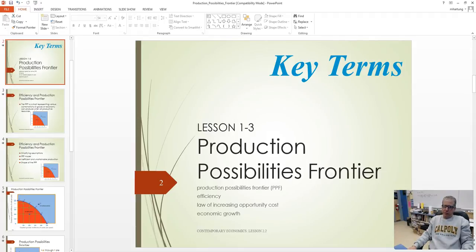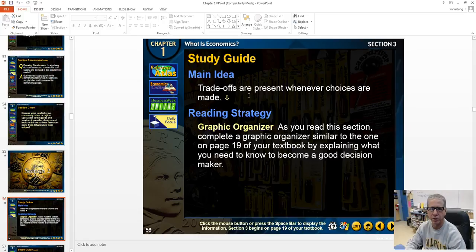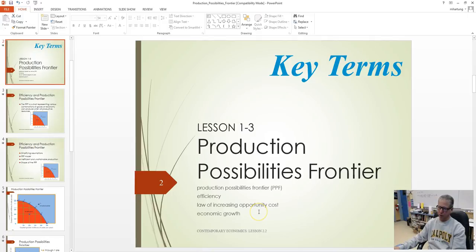The production possibilities frontier is a model that allows us to explore the law of increasing opportunity costs, which is related to trade-offs. Trade-offs are present whenever choices are made. When we decide to do one thing, we have to give up something. In economics, when we make a decision to do something, we have to give up the opportunity to do other things. When we decide to do more of one particular action, we have to give up more and more of the other one as we trade off resources. The production possibilities frontier is a simplification of what happens in the economy when choices are made.